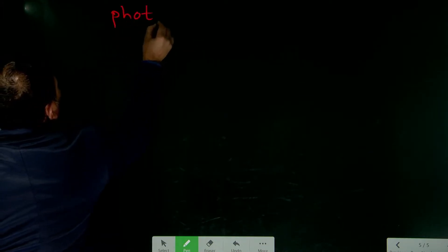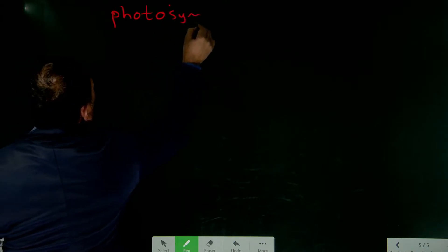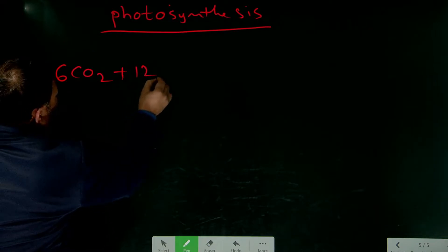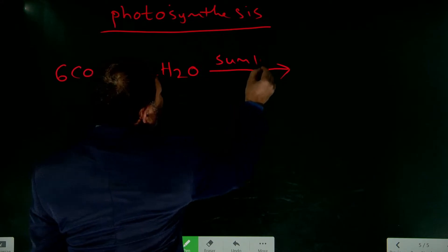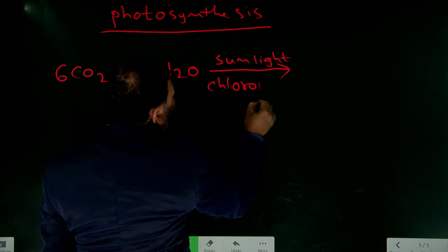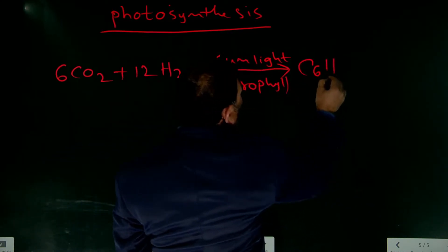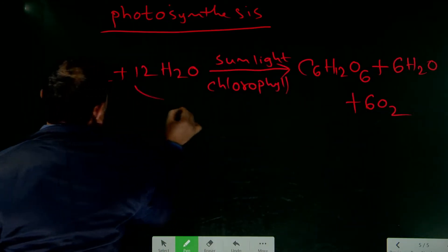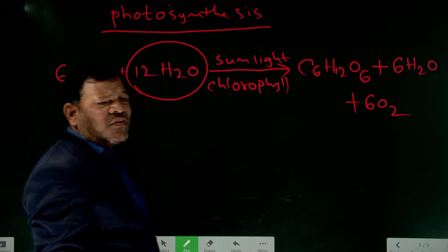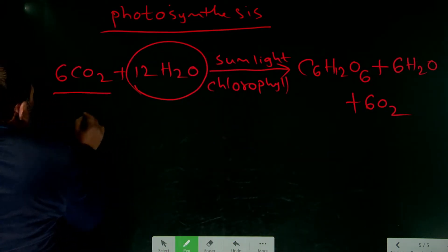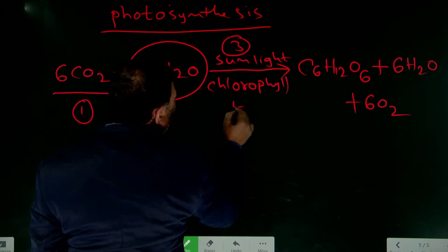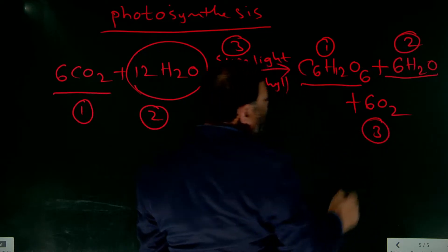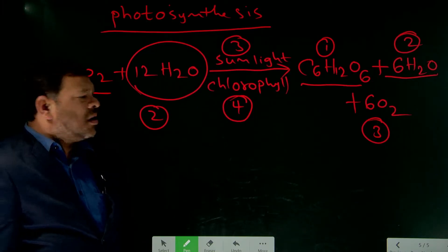For example, in the photosynthesis mechanism: 6CO2 + 12H2O, with sunlight and chlorophyll, produces glucose plus 6H2O and oxygen. Water is essential in photosynthesis — the essential ingredients are carbon dioxide, water, sunlight, and chlorophyll. The products are glucose, water vapor, and oxygen.